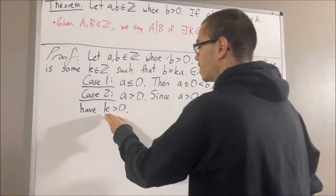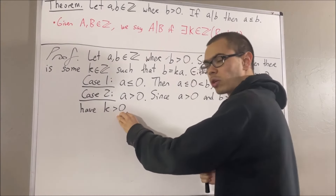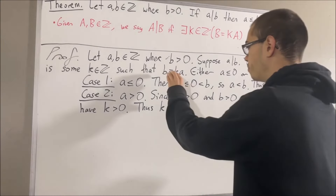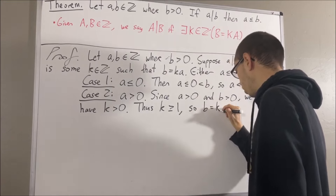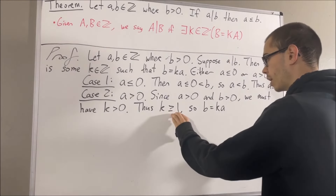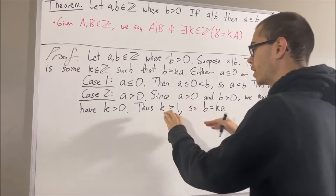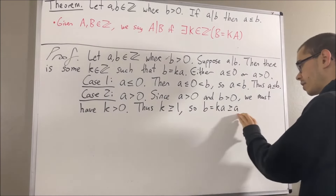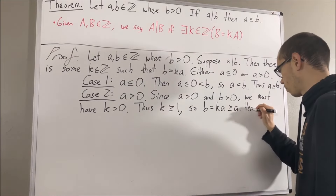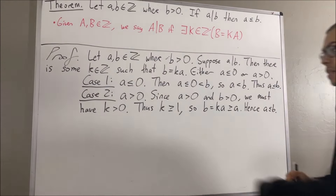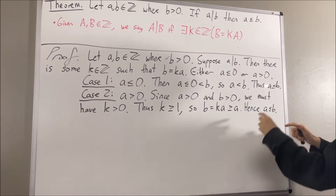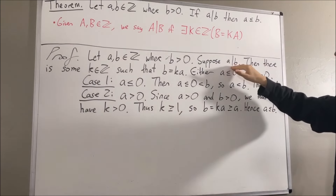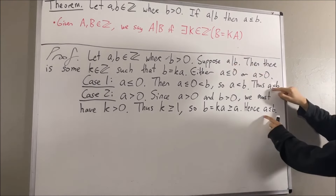And since k is an integer, this is equivalent to saying that k is greater than or equal to one. Now, b is equal to k times a, and if we take this inequality k ≥ 1 and multiply the positive number a on both sides, we get that ka is greater than or equal to a. And so this tells us that a is less than or equal to b. We see that in either case, we have that a is less than or equal to b, so if a is a divisor of b, then a is less than or equal to b.